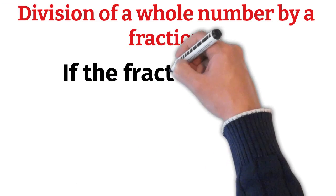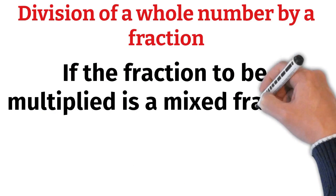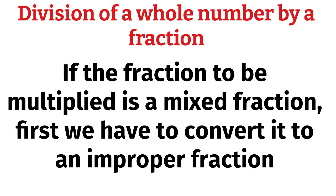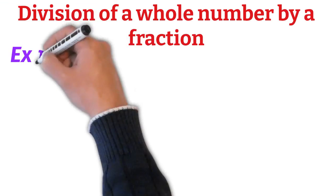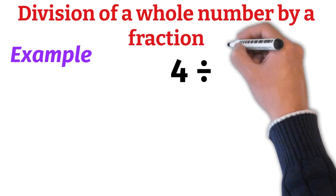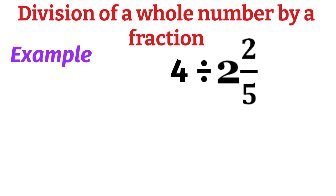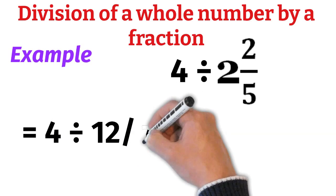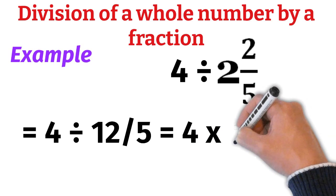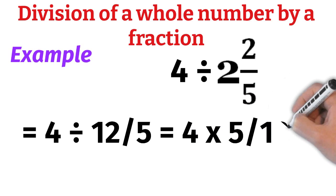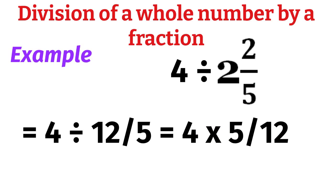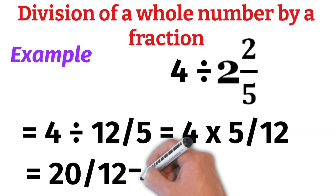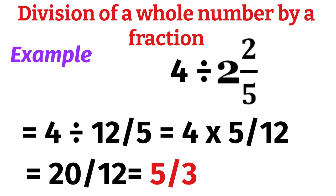However, if the fraction to be divided is a mixed fraction, first we have to convert it to an improper fraction. For example, 4 ÷ 2 and 2/5 = 4 ÷ 12/5 = 4 × 5/12 = 20/12 = 5/3.